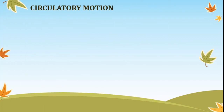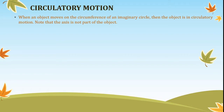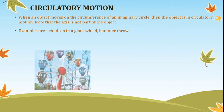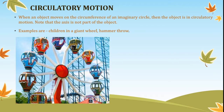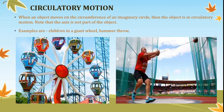Circulatory motion. When an object moves on the circumference of an imaginary circle, then the object is undergoing circulatory motion. It is also important to note that the axis is not a part of the object. Merry-go-round, giant wheel, and hammer-throw are some examples of circulatory motion.